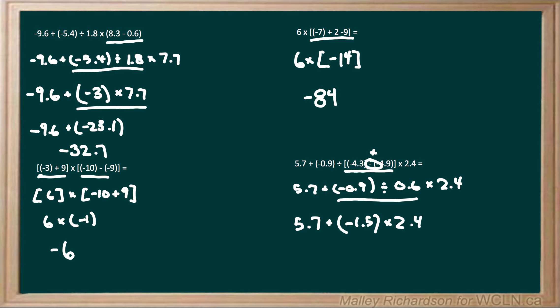Now we have addition and multiplication. According to BEDMAS we have to do our multiplication first. So we have 5.7 plus negative 1.5 times 2.4. A negative times a positive leaves us with a negative answer. So 1.5 times 2.4 is 3.6, and negative times positive gives us negative 3.6. Now we're just left with 5.7 plus negative 3.6, which is the same as 5.7 minus 3.6, leaving us with a final answer of 2.1.